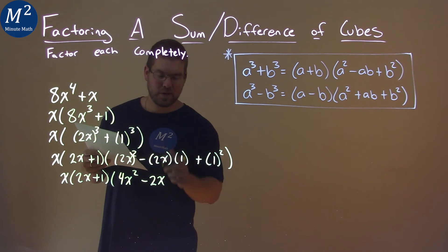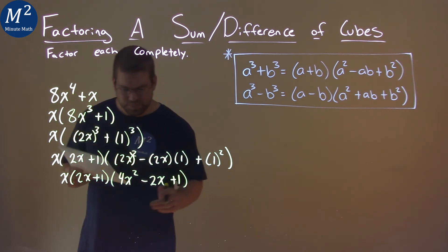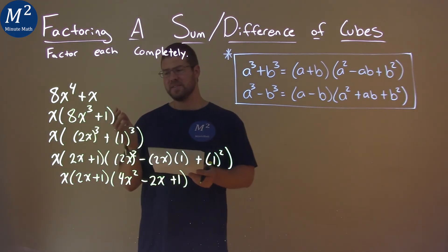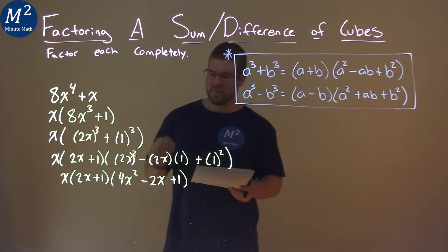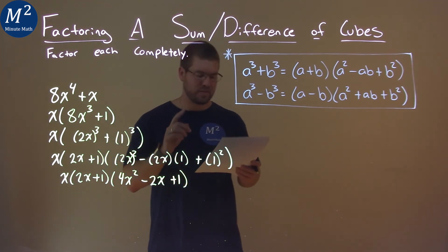And 1 squared, if you can guess it, is 1. And so our final answer here is just x times 2x plus 1 times 4x squared minus 2x plus 1.